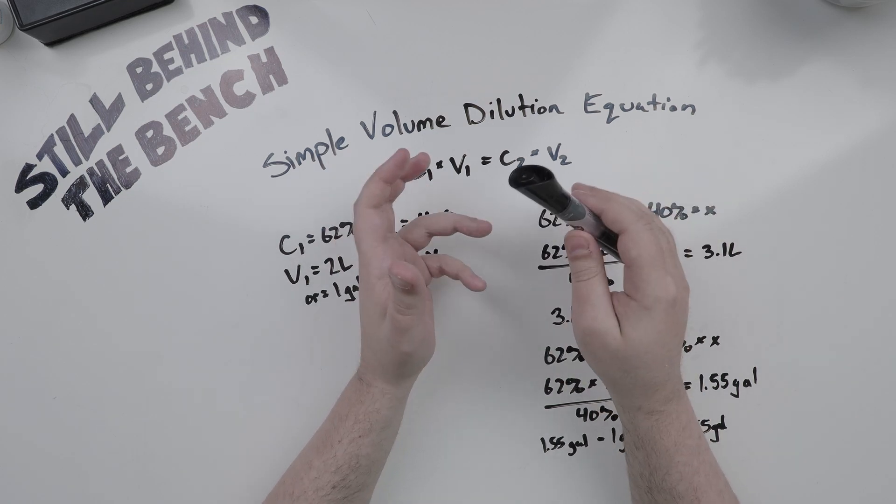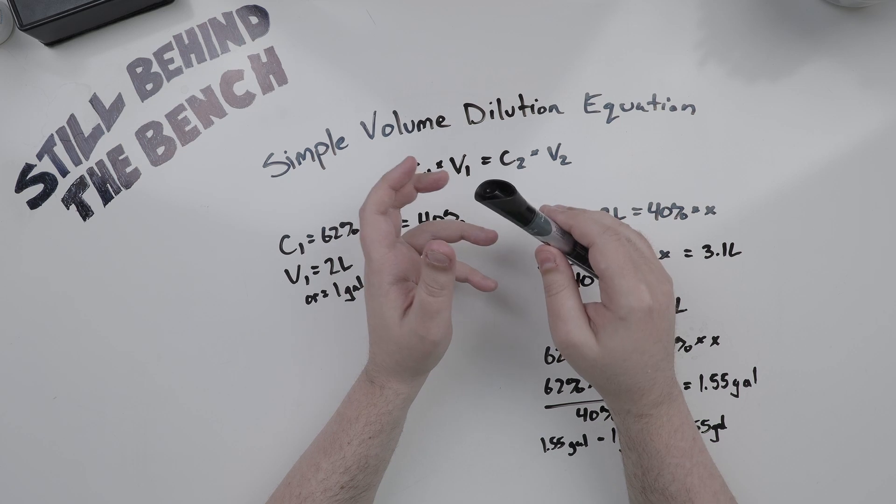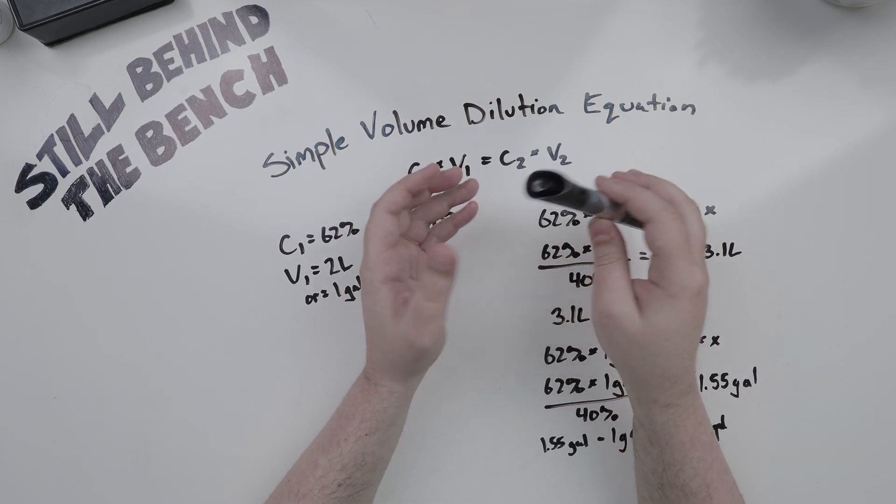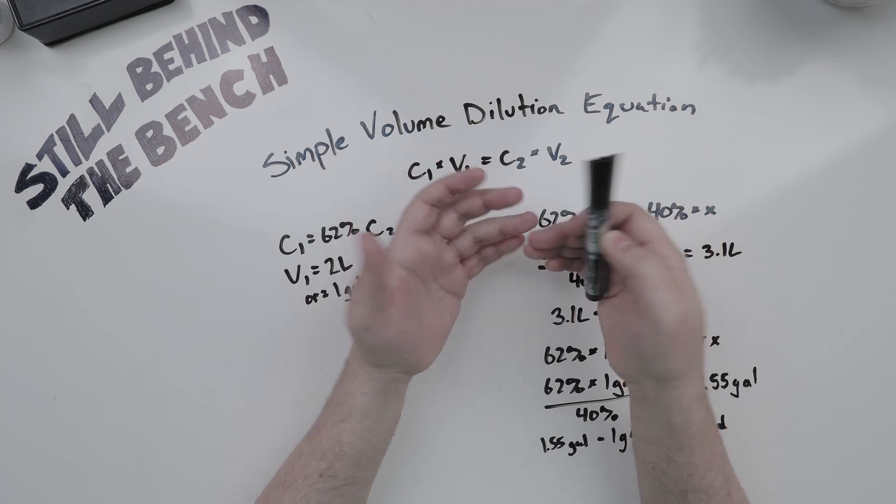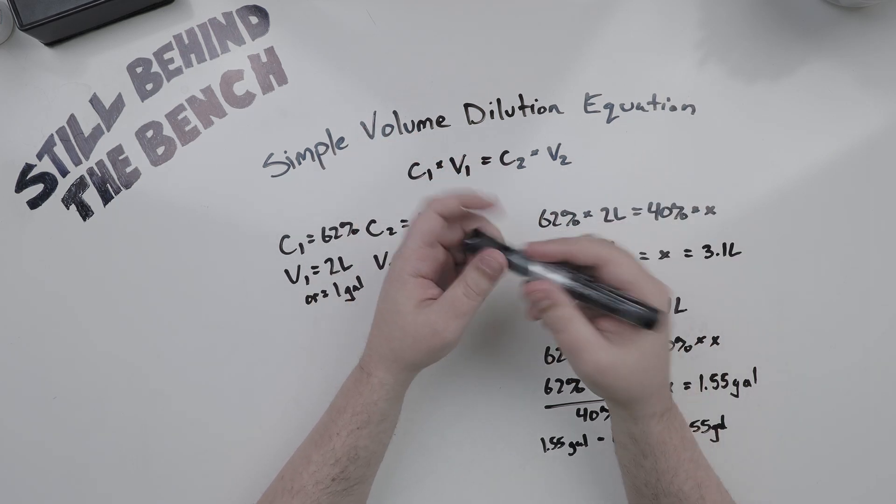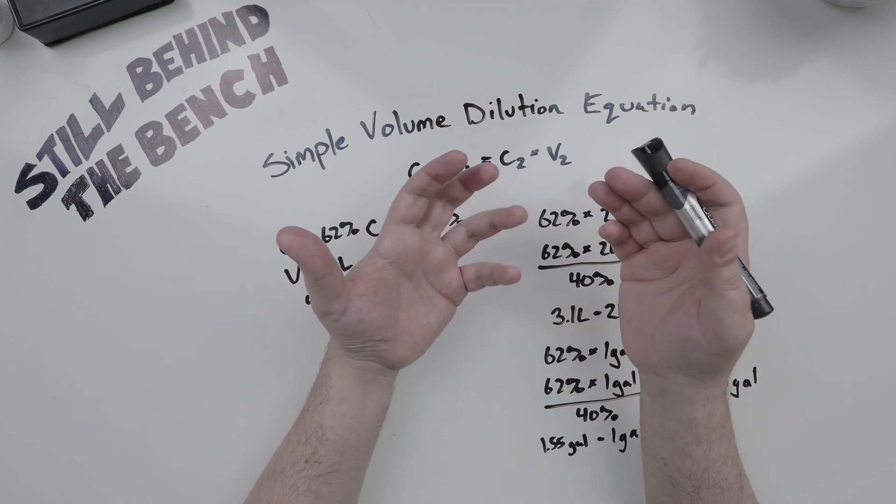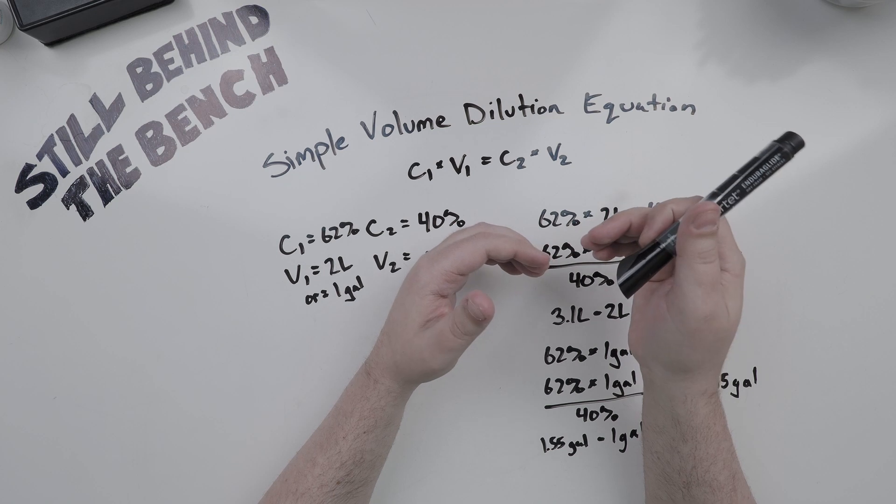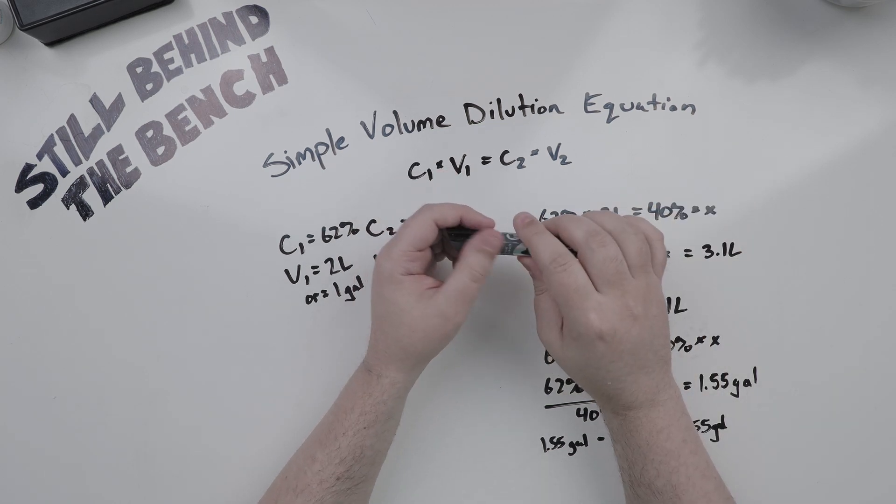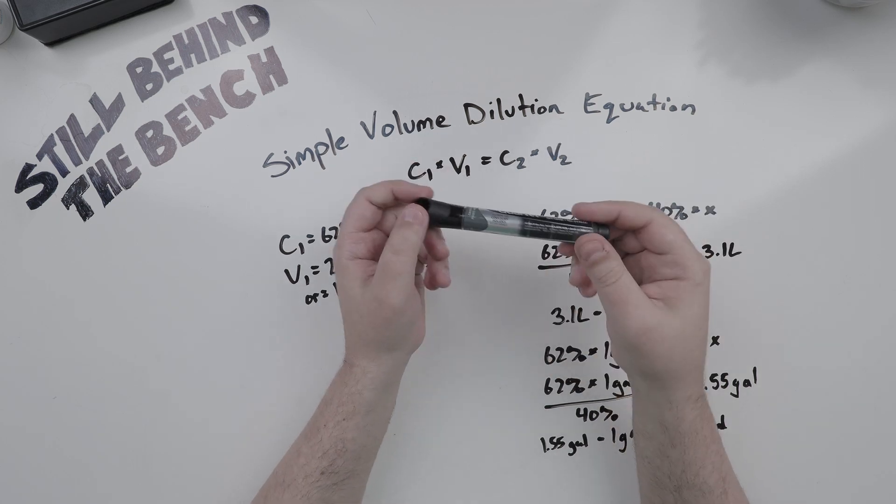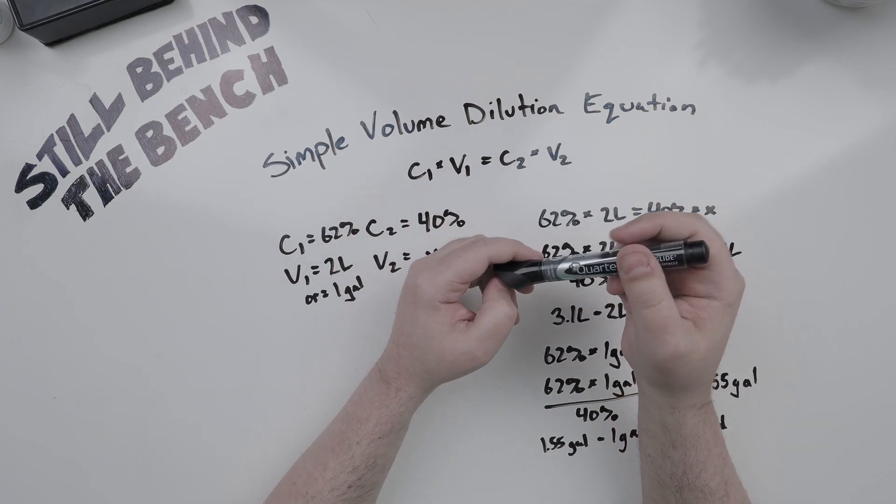Dilution is the act of lowering the concentration of a solute in a solution by adding more solvent. In this case the solute is ethanol and the solution is the spirit. You can use water or another less concentrated alcoholic beverage. Generally there are three ways to go about calculating dilution, then there's just the manual way of doing it.